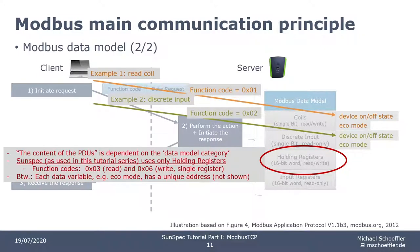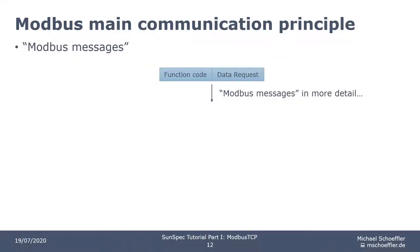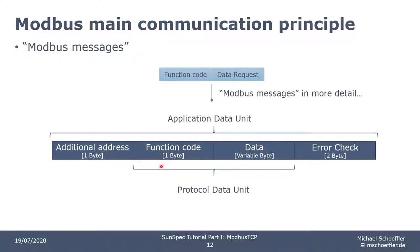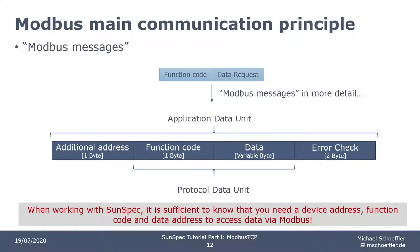It might also be important to know that each data variable accessible via Modbus has a unique address. Let's have a deeper look into messages sent via Modbus. You already know the inner part of PDUs — the function code and the data field. Typically, each protocol implementation of Modbus, for example Modbus over Serial Line or Modbus TCP, requires adding some more data to the PDU. In the specification documents, this data overhead is represented as additional data and error check. The PDU with the protocol-specific data overhead is called an Application Data Unit (ADU). For SunSpec, it's basically sufficient to know that you need a device address, function code, and data address in order to communicate with devices.